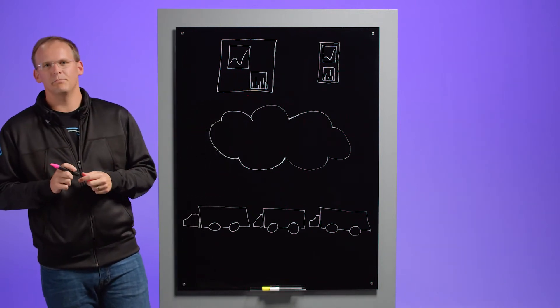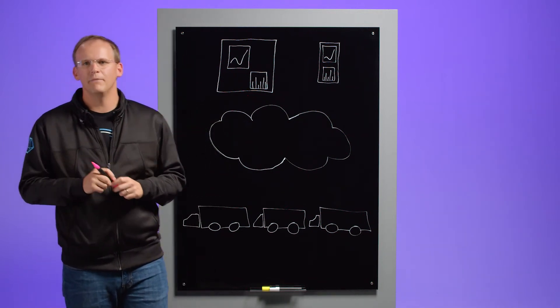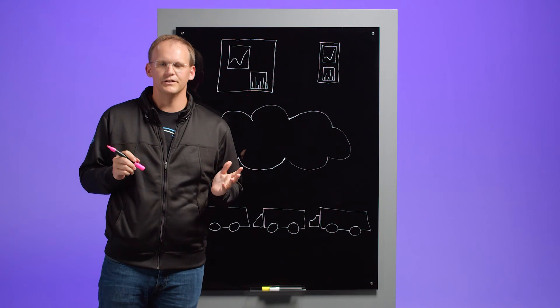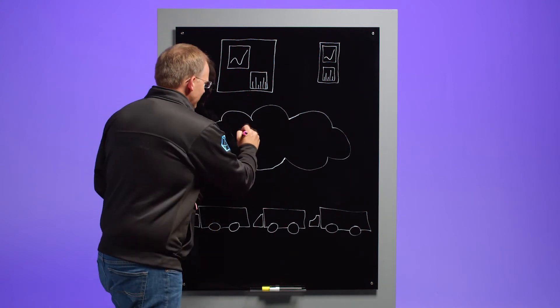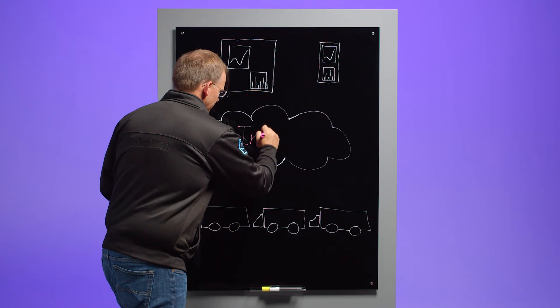InfluxDB is a time series platform meant to handle massive amounts of data and process that information in real time. That data also includes GPS and geolocation data.